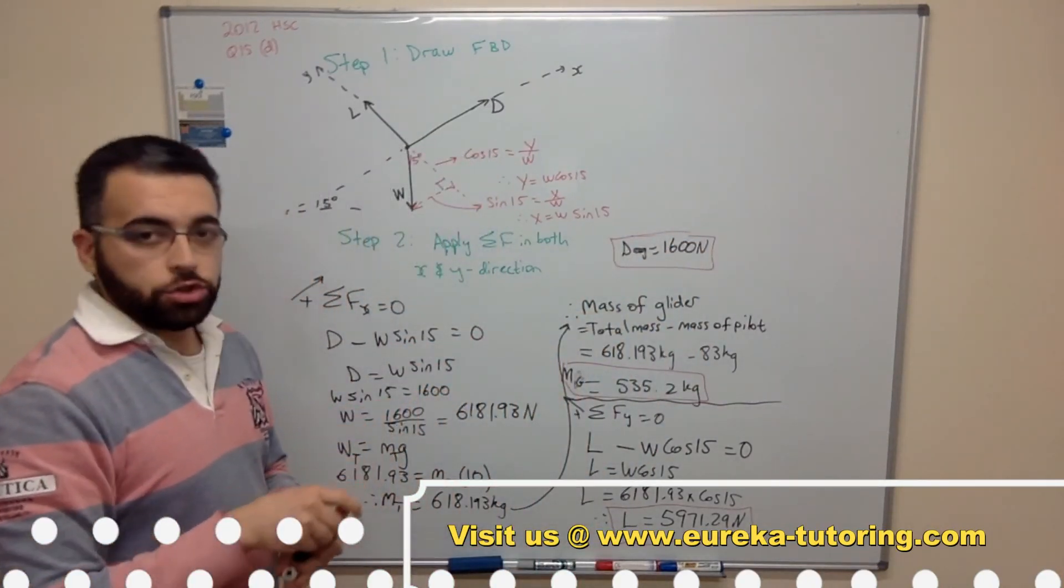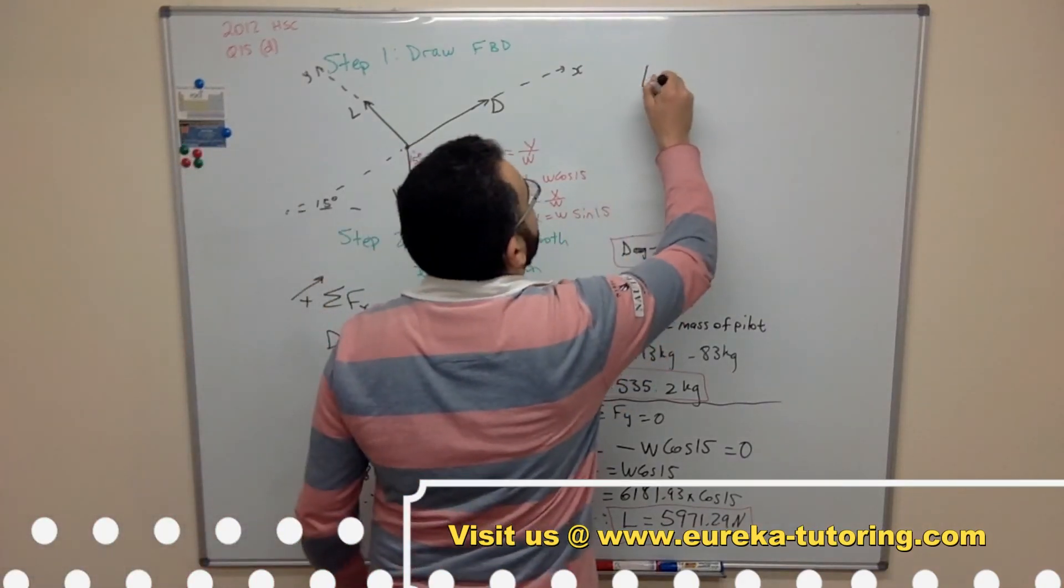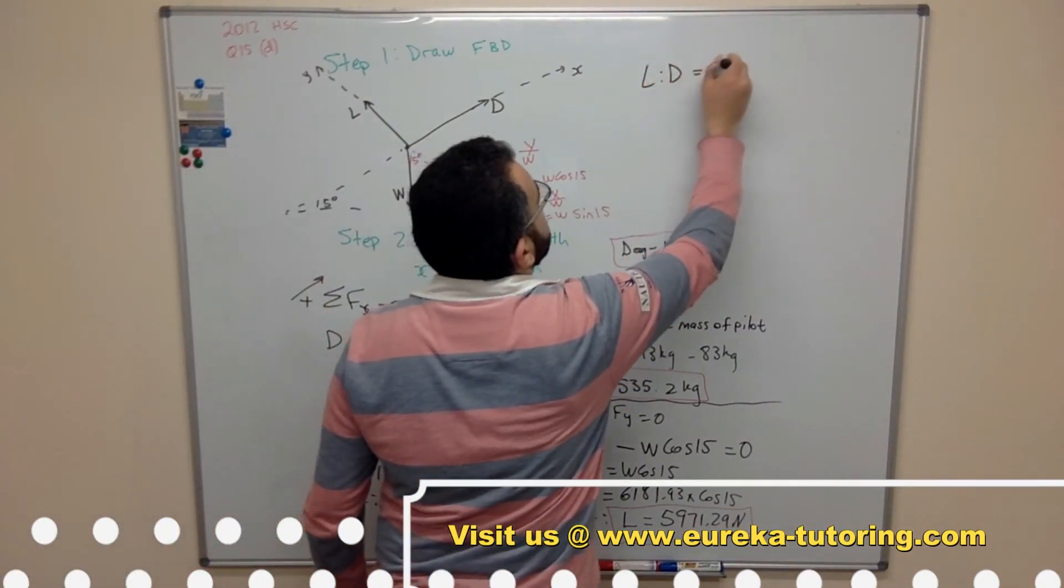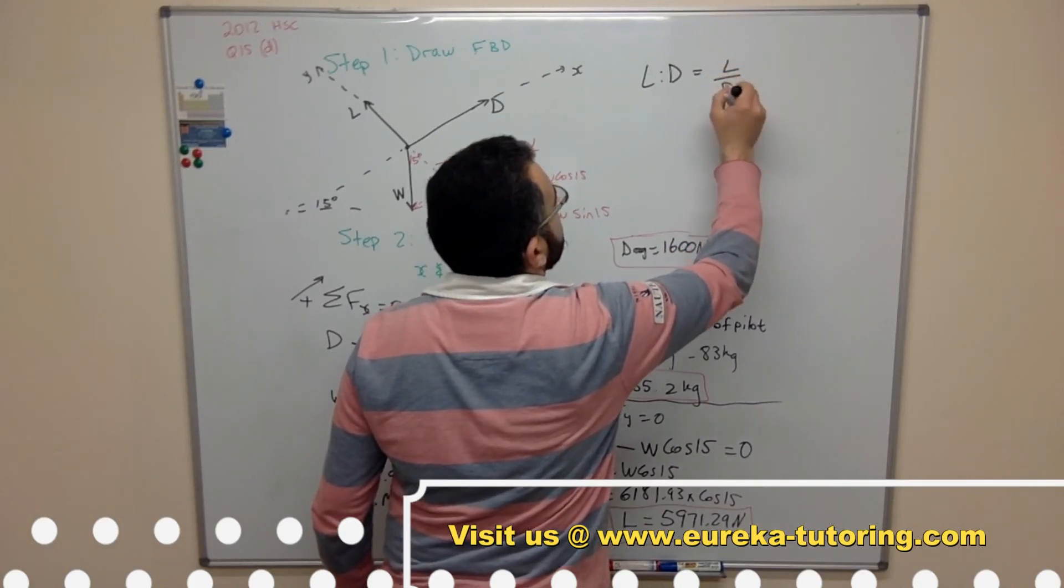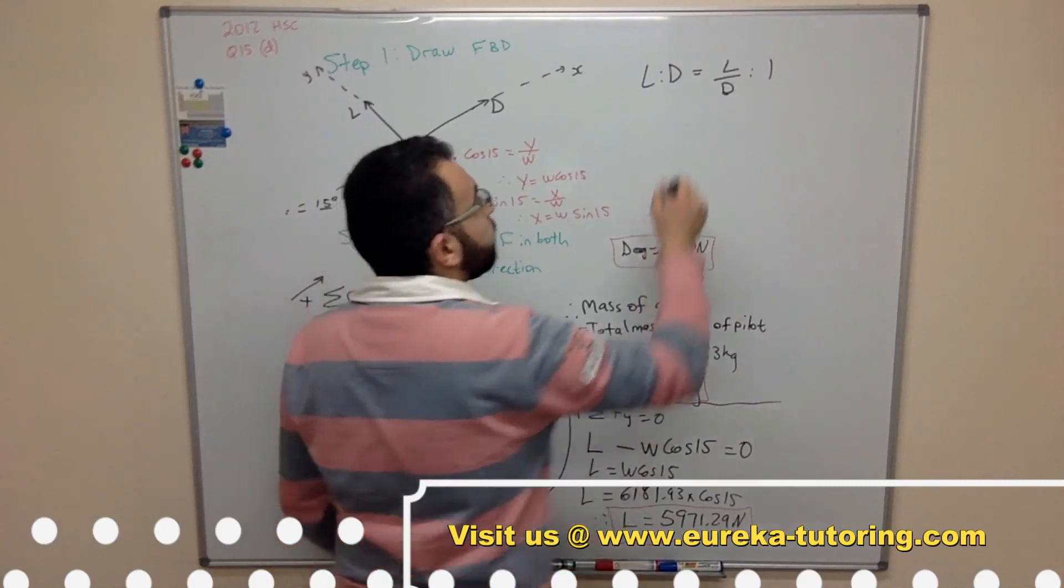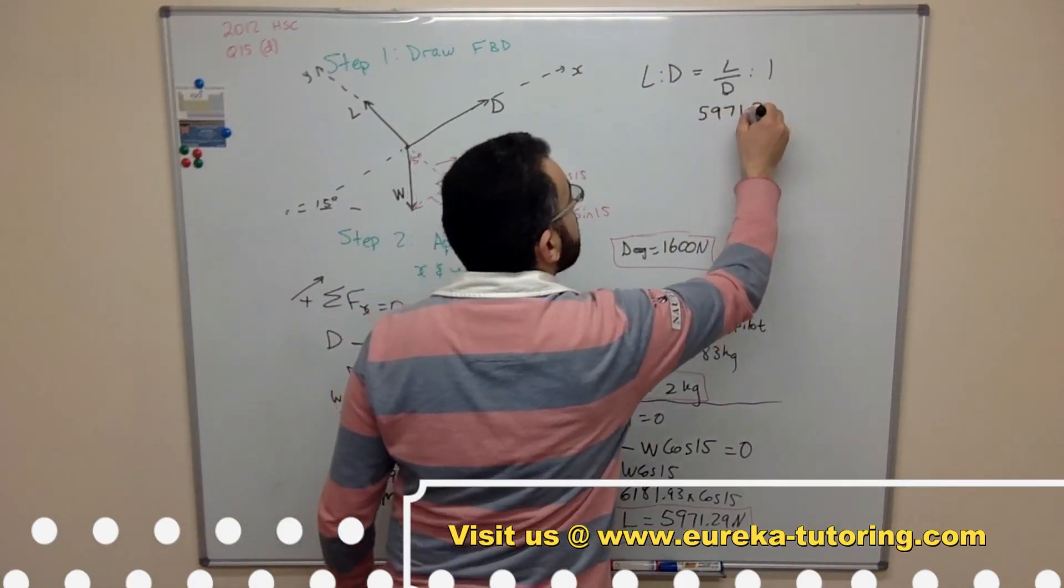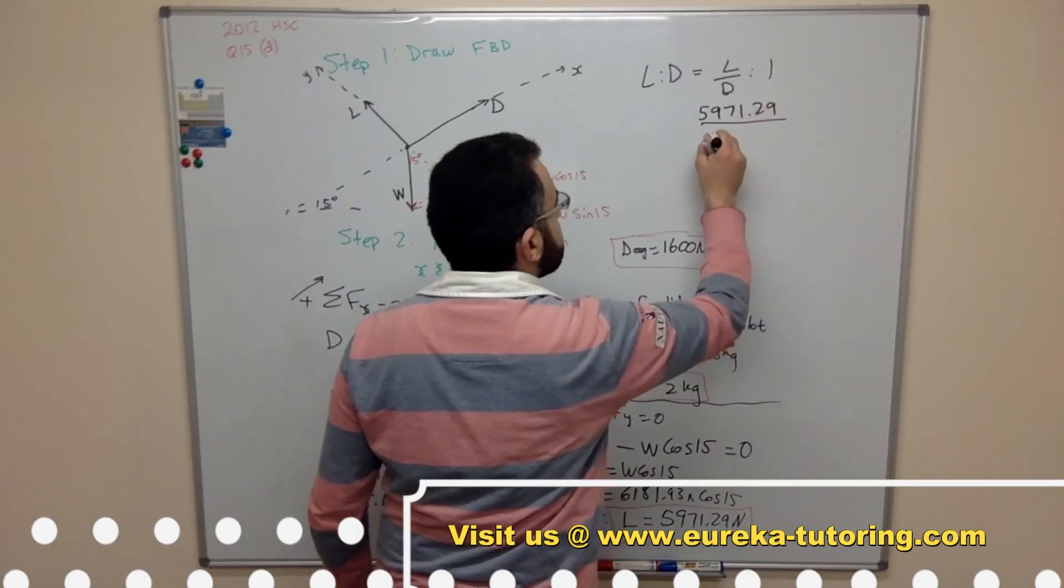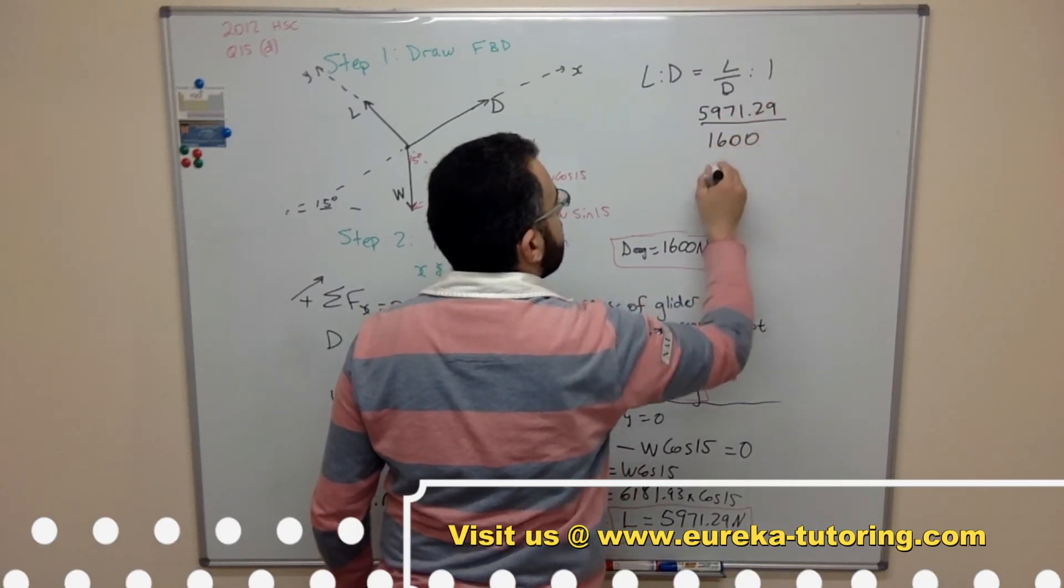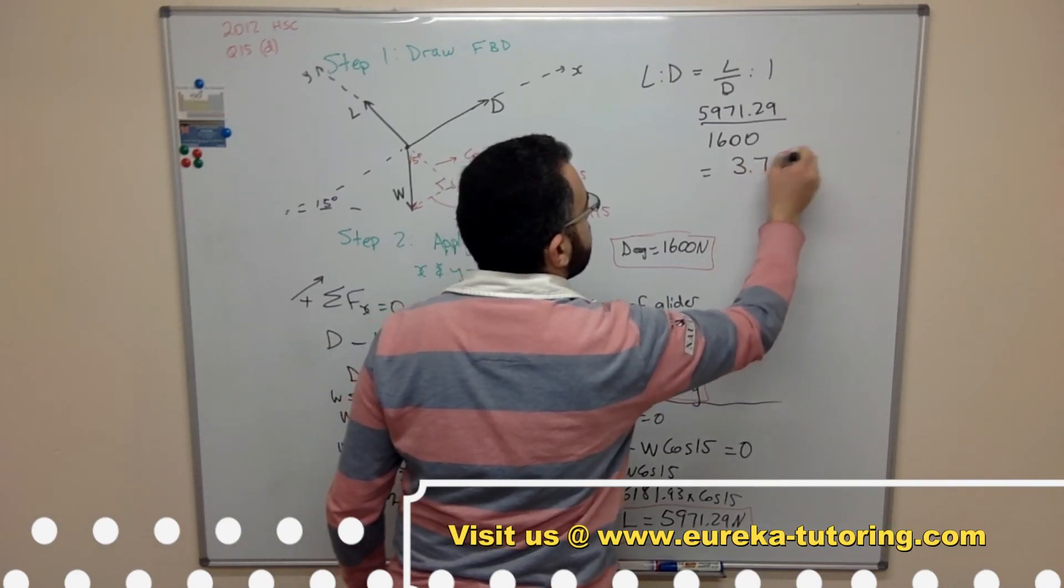Now the lift to drag ratio. To find the lift to drag ratio it's simply lift over drag. So lift to drag is the same as lift over drag. So lift is 5971.29. Drag is 1600. And that equals 3.73.